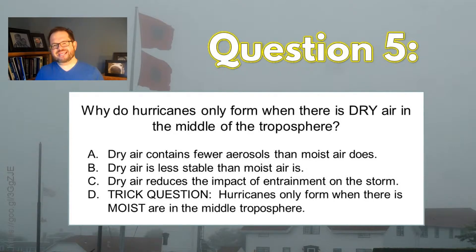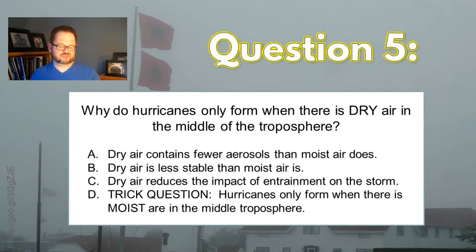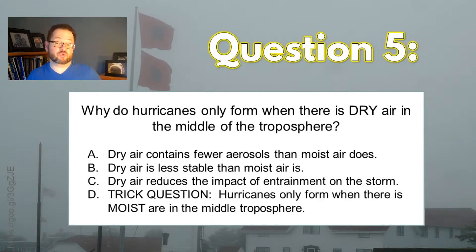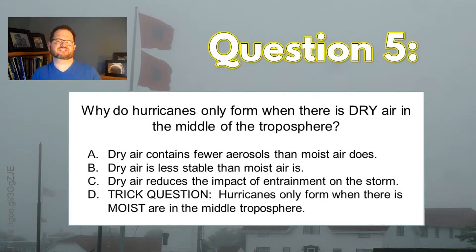It's actually D. I know students often don't want to bite on those trick question answers, but we need to have moist air in the middle troposphere so that we can minimize the impact of entrainment into the thunderstorms that make up the eye wall and the rain bands and so on of the hurricane.